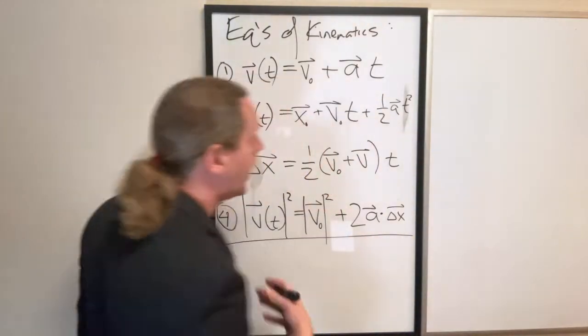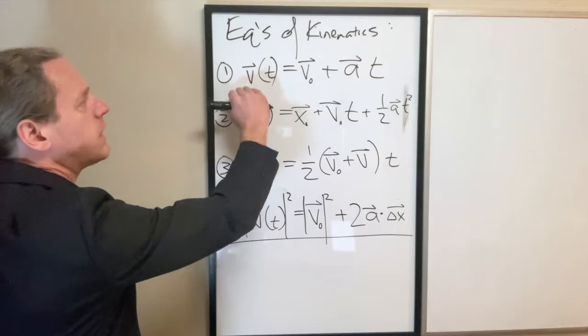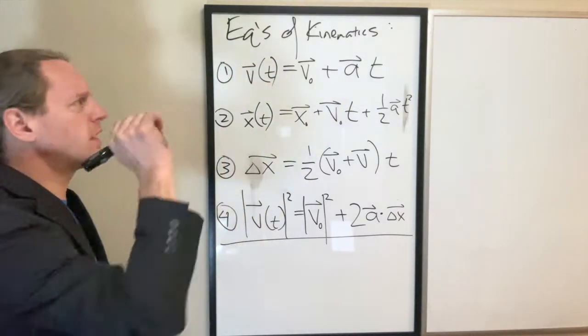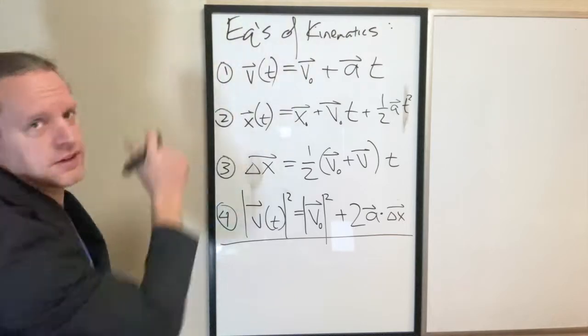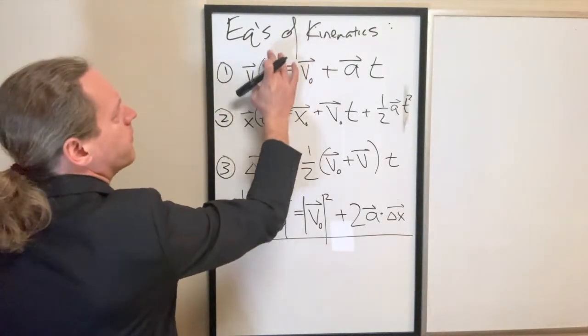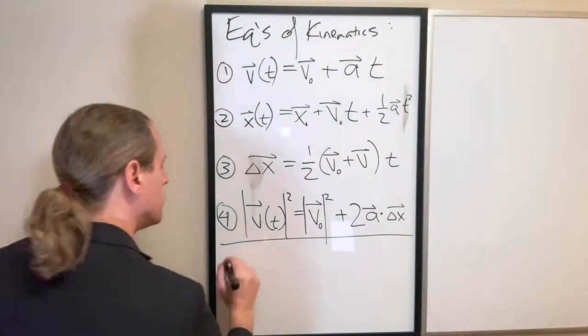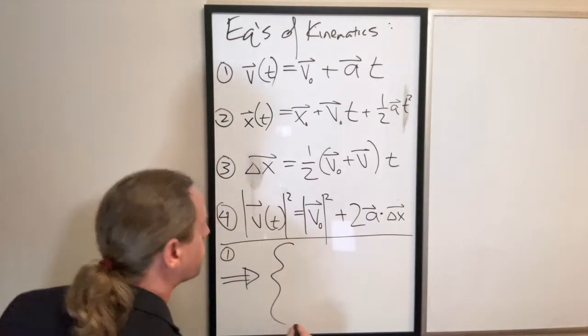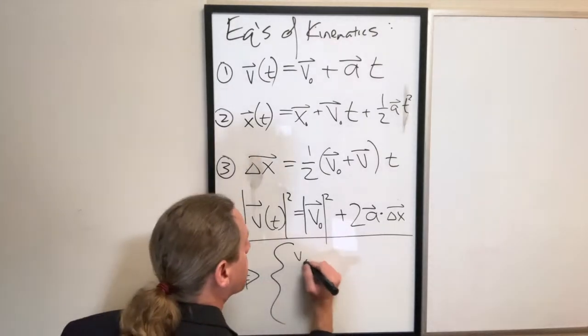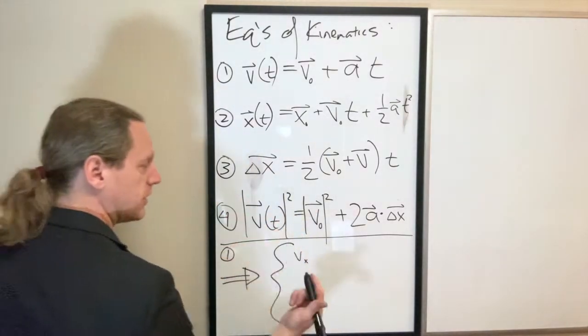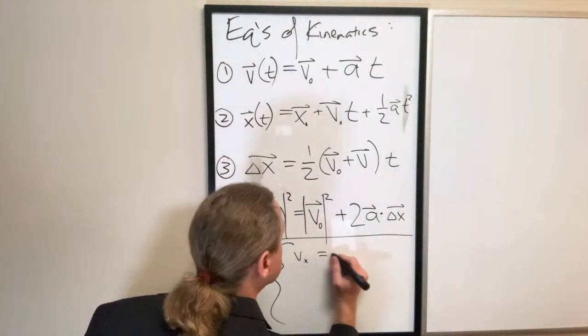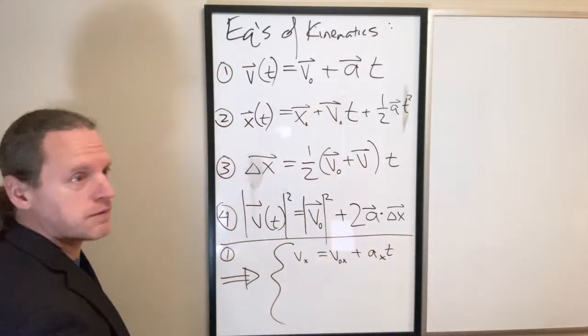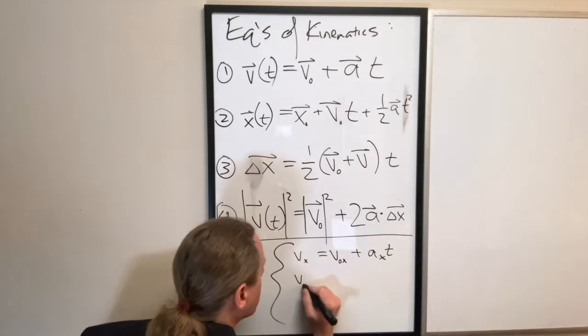Now, before we do that, I had one more thing to mention, and that's the fact that when I write these equations as vectors, I just want to show explicitly what that means, and I'm just going to show, for example, number 1. It's the easiest. And I'm going to drop the parentheses t here. So, equation number 1 actually means vx, or the final velocity, equals the initial velocity v naught x plus ax t.